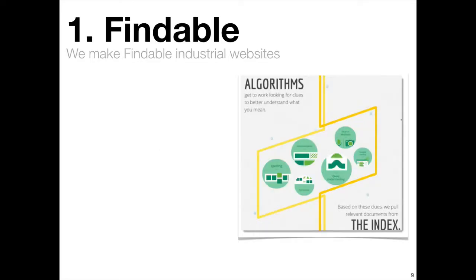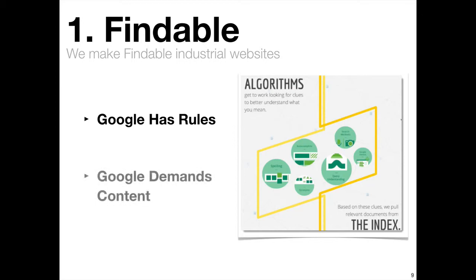First is findability. Google has two challenges to maintaining its dominance in the search engine business. First, they have to find the correct website. And second, they have to provide a rewarding experience to the searcher by providing them with good quality search material. To find appropriate online information, Google has specific rules for building websites. These rules provide a short-form index card for Google about your website. If you don't follow the rules, Google's index card will be incomplete, and Google will not be able to find you when someone searches for your product. The most important rule is to have plenty of content. Google knows that the only way to keep people using its search engine is to provide good quality answers to their questions — and that means good original content.